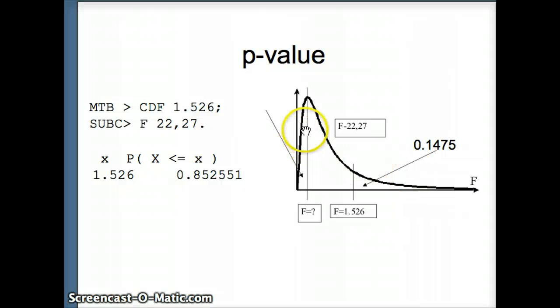So the part in this tail is about 0.1475. So since it's a two-tailed test, the part in this tail is also 0.1475. And if I put those together, that will give me my P value, more than 29. So that certainly is a very high P value.